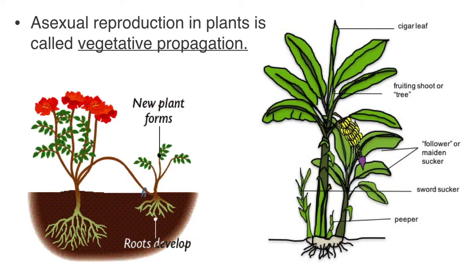Another form of asexual reproduction is something called vegetative propagation. This is common in plants. Vegetative propagation, like all asexual reproduction, involves only one parent plant, and the new plant is genetically identical to the parent. It can happen naturally with some plants, but we most often see it when humans help it along.